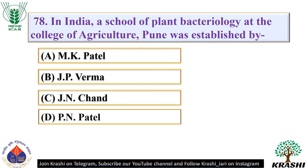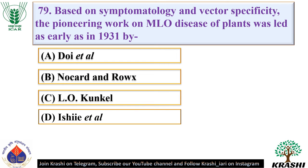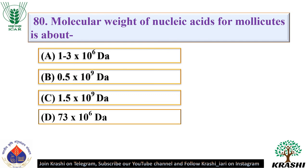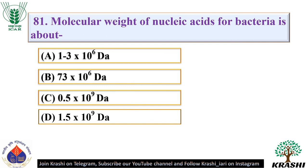Question number 79: Based on symptomatology and vector specificity, the pioneering work on MLO disease of plants was led as early as in 1931 by — it was done by L.O. Kunkel. Question number 80: Molecular weight of nucleic acids for viruses is about — it is about 0.5 × 10⁹ dalton. Question number 81: Molecular weight of nucleic acids for bacteria is about — it is about 1.5 × 10⁹ dalton.